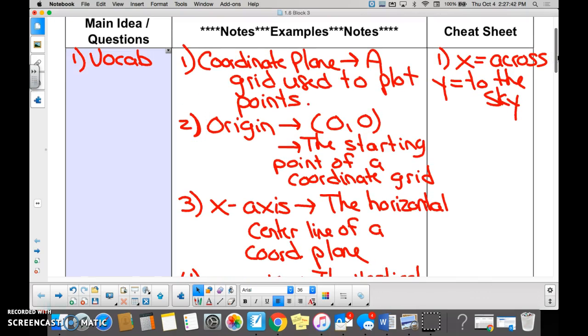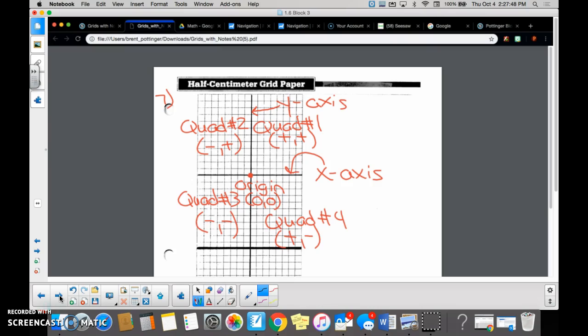A coordinate plane, according to our definition, is a grid used to plot points, right? So a coordinate plane looks like that, yes or no?